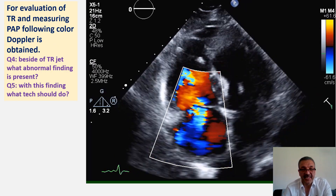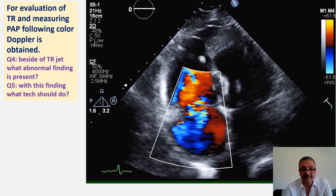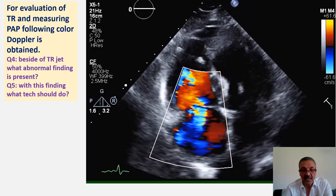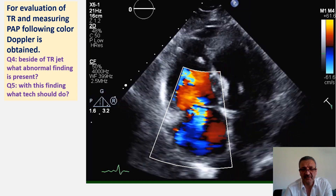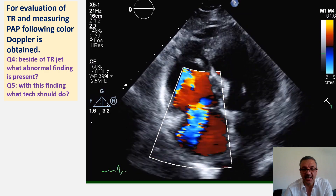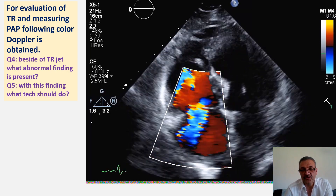Based on those primary images, a Doppler scan for tricuspid regurgitation has been taken to evaluate pressure. As you can see here, beside the TR, question four: what other abnormality can you see?